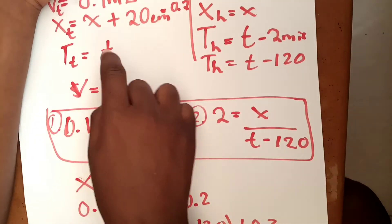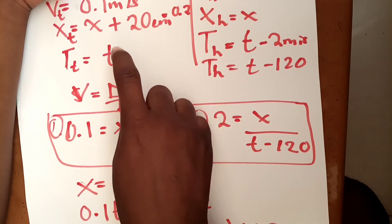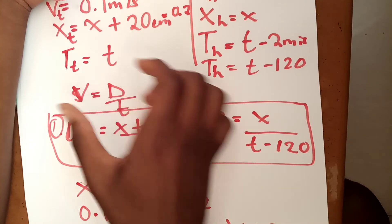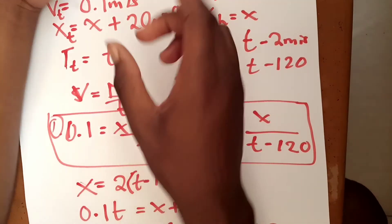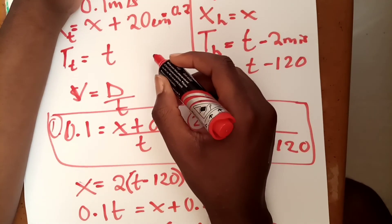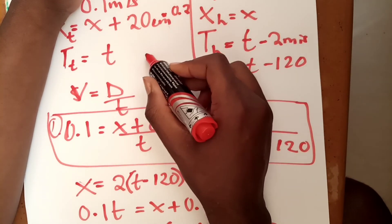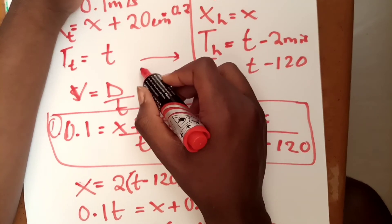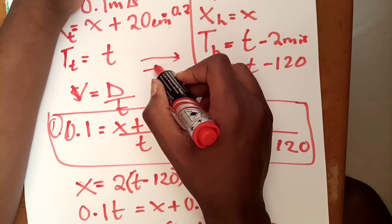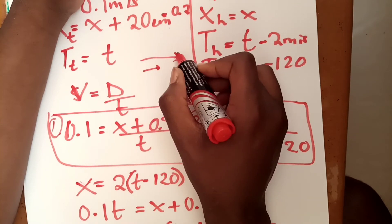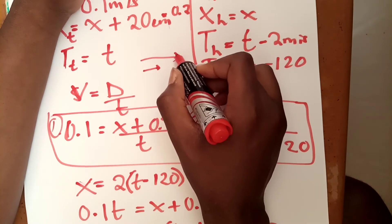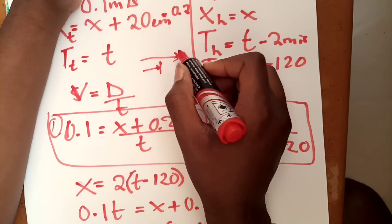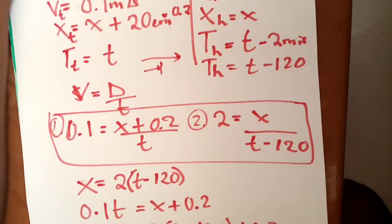This time t equals 126.2 seconds is the total time for the race — it's the time the tortoise spent running. Since the tortoise won, it's like two people racing: the one who runs longer and finishes is the reference. The tortoise's time is the total race time because the hare stopped before the tortoise crossed the finish line.